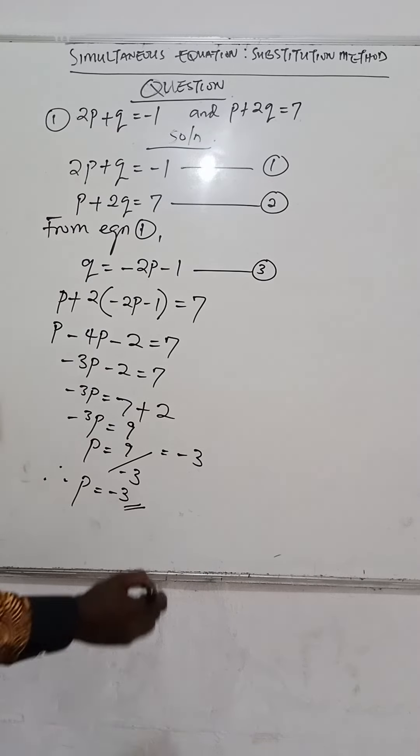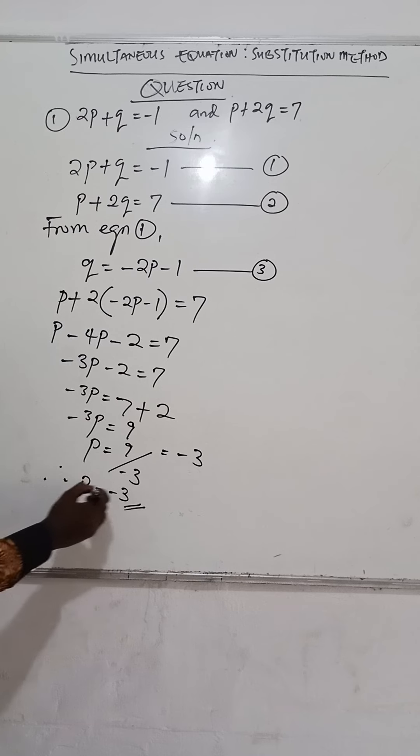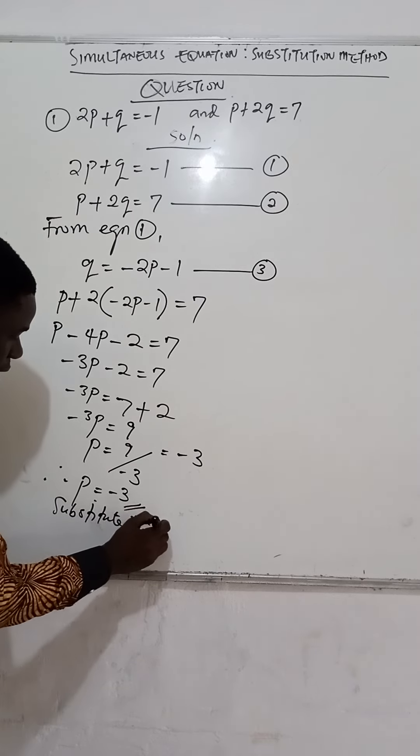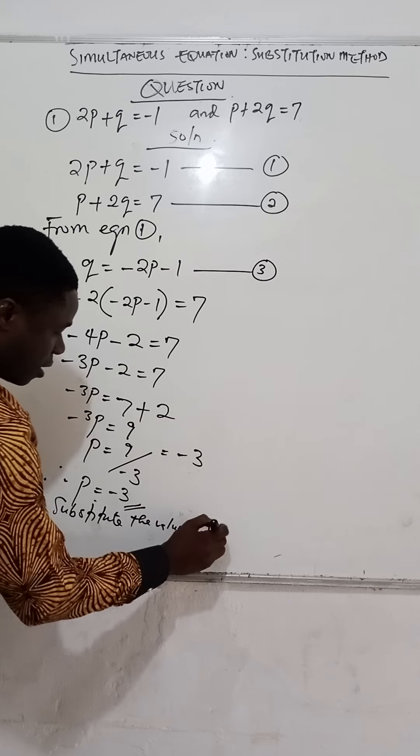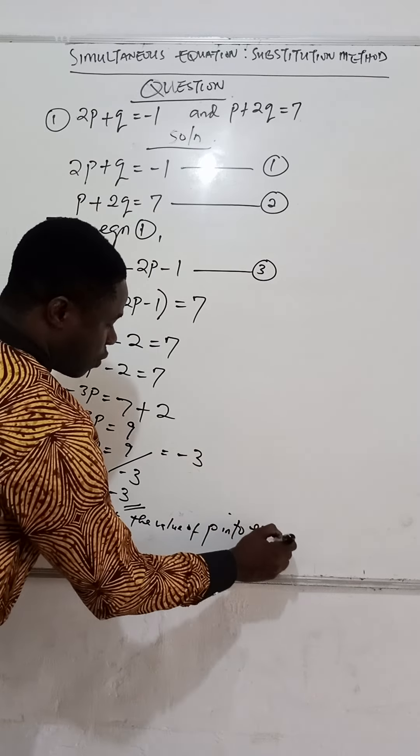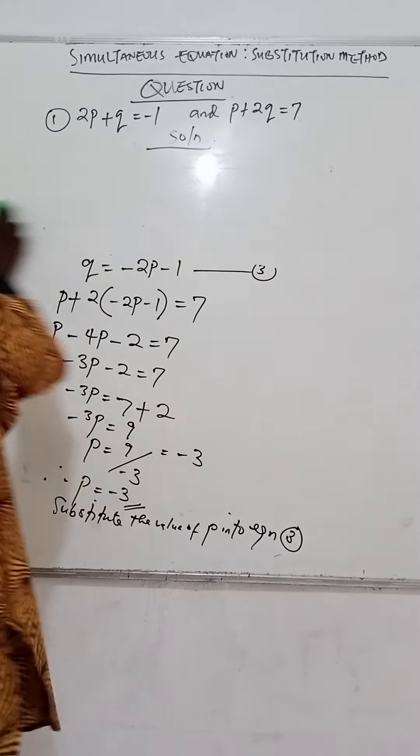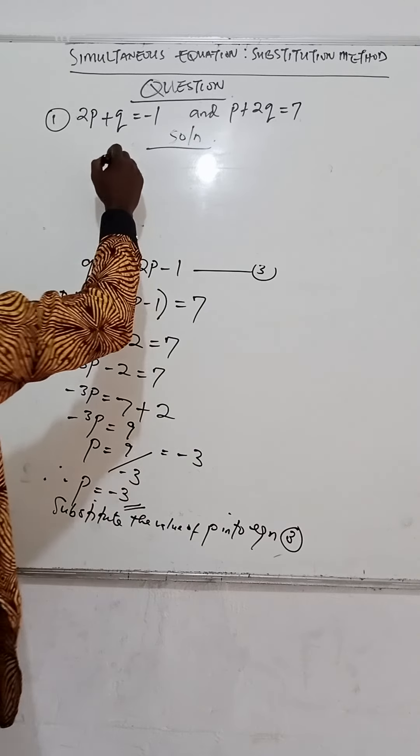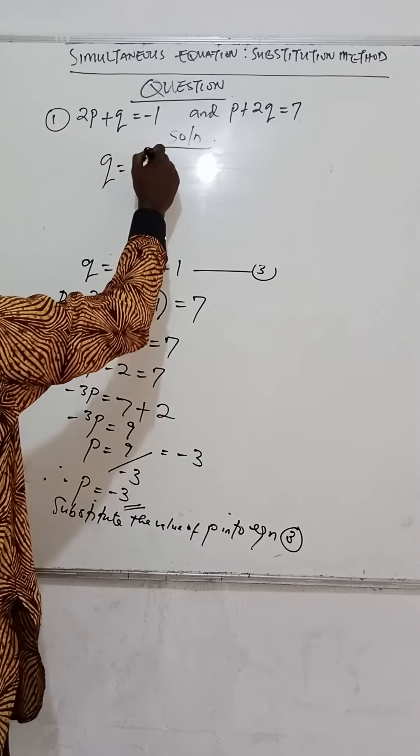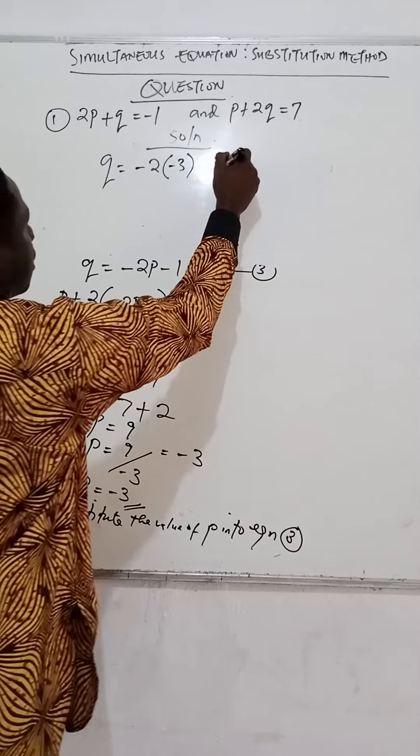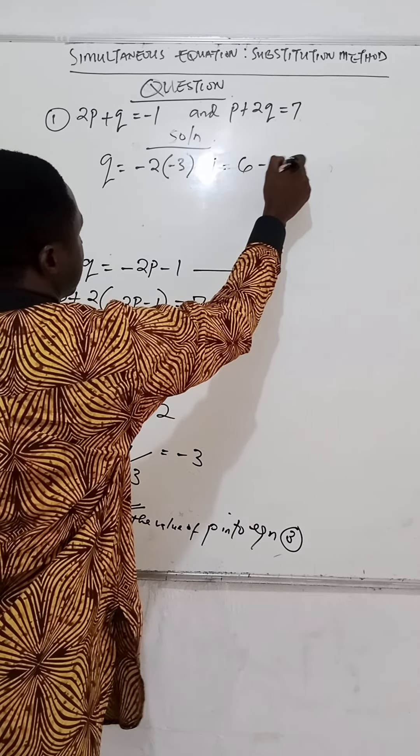To get our q here, we substitute the value of p into equation 3. We substitute the value of p into equation 3. If we do that, then we substitute the value p = -3.